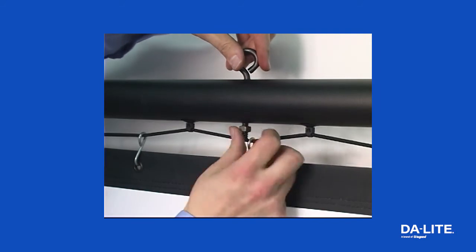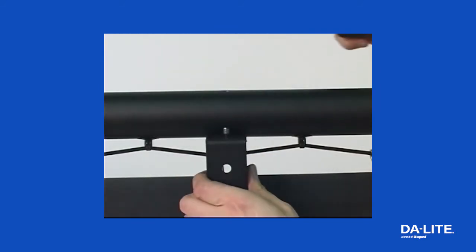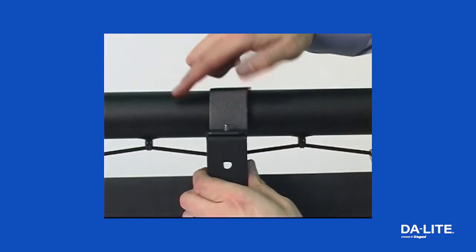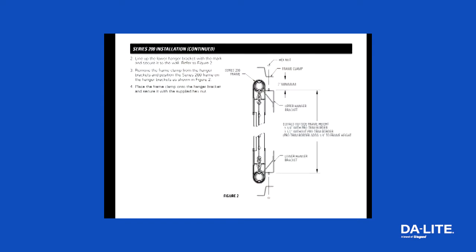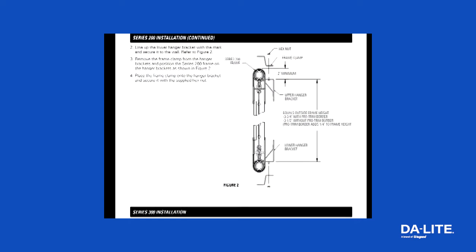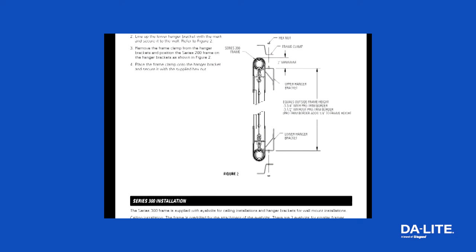For wall mount installations, the number and placement of wall brackets will vary depending on the size of your screen. Detailed mounting instructions are provided with the frame and are also available on daylight.com.